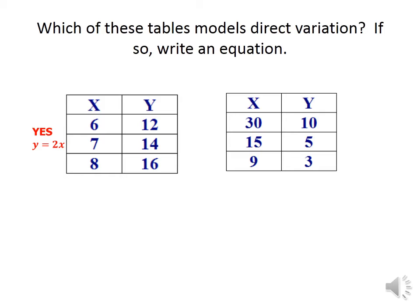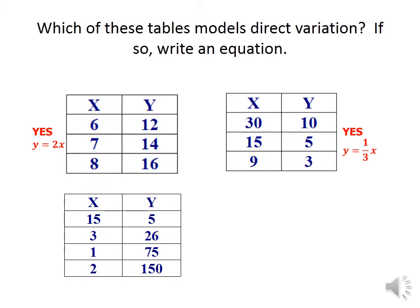For the second table: 30 divided by 10 equals 3; 15 divided by 5 equals 3; 9 divided by 3 equals 3. Starting from y: 10 over 30 equals 1 over 3; 5 over 15 equals 1 over 3; 3 over 9 equals 1 over 3. So the relation is y equals 1 over 3 times x. For the third table: 5 over 15 equals 1 over 3, but 26 over 3 is not equal to 1 over 3. So this is not a direct variation.